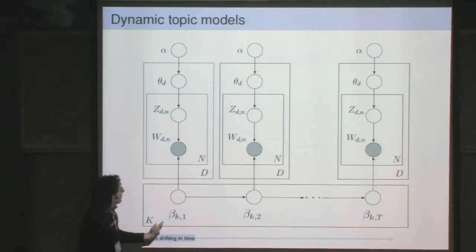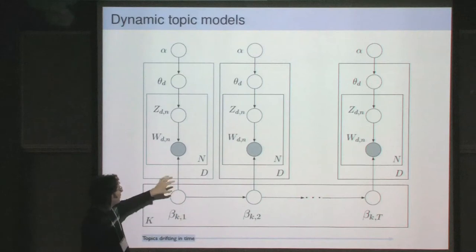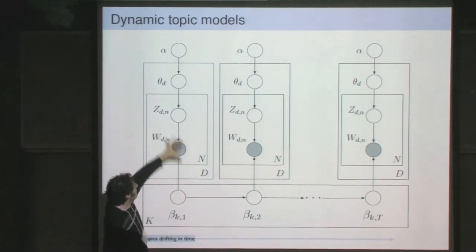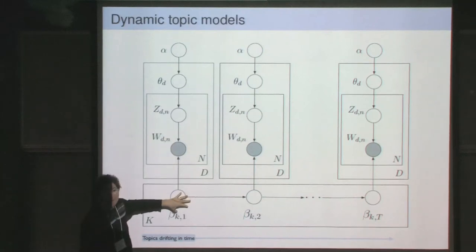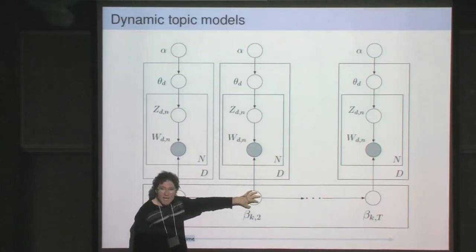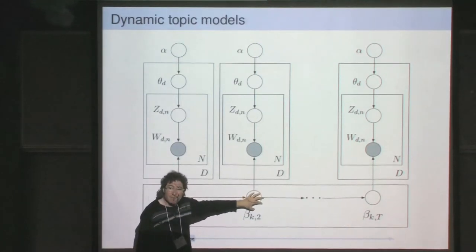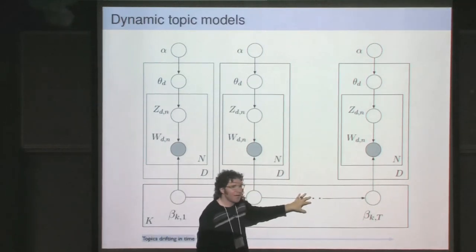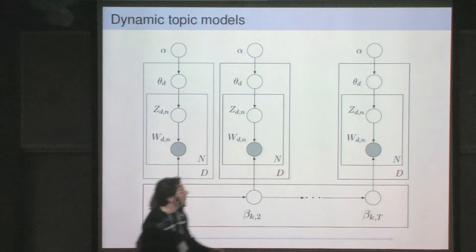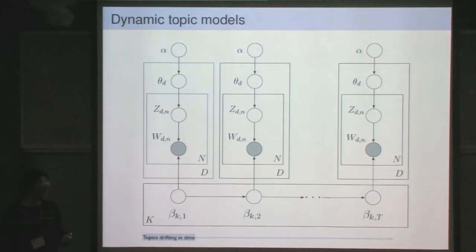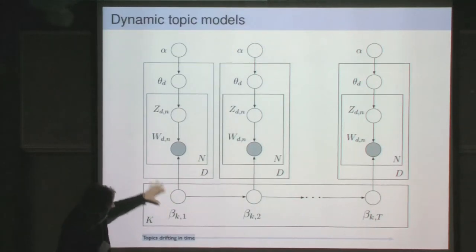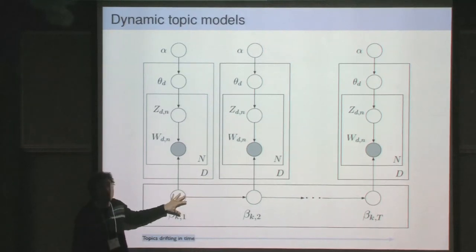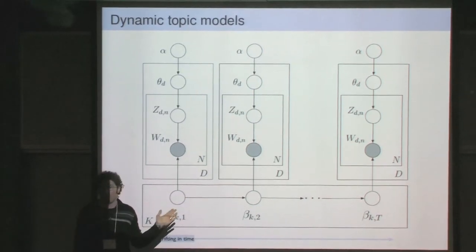In the dynamic topic model, each vertical slice of nodes is a year—for example, Science Magazine starting in 1880 with K topics. We generate all documents of 1880, then march forward to 1881 where the topic distributions drift a little. We generate 1881's documents, march to 1882, and so on until the present day. When we analyze data with this model, we get a retrospective estimate of topics under the assumption that they drift through time from 1880 to the present.